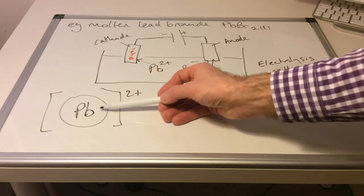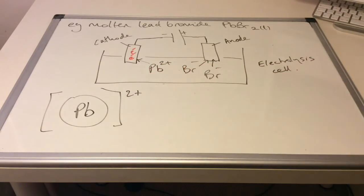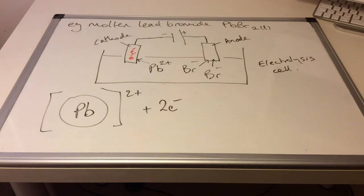And we typically would draw an empty outer shell for a positively charged ion. Underneath here, which we don't need to show, is a full outer shell.